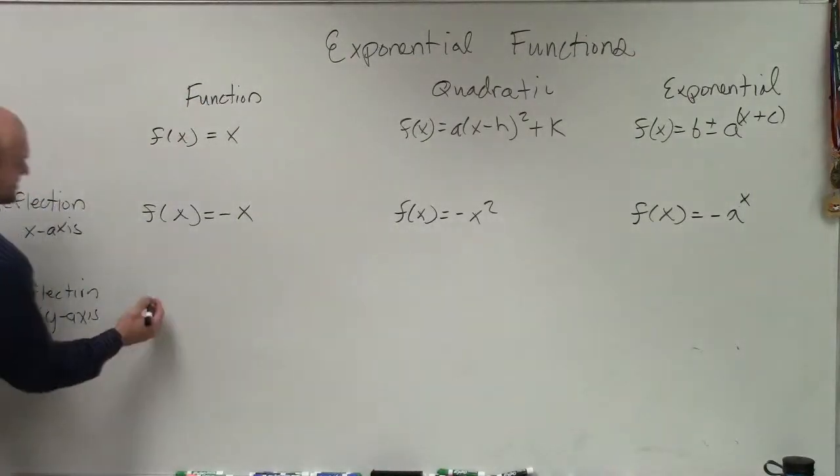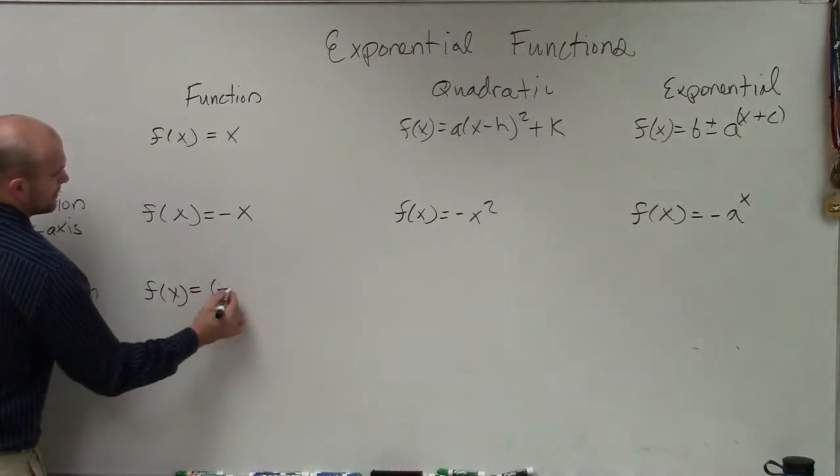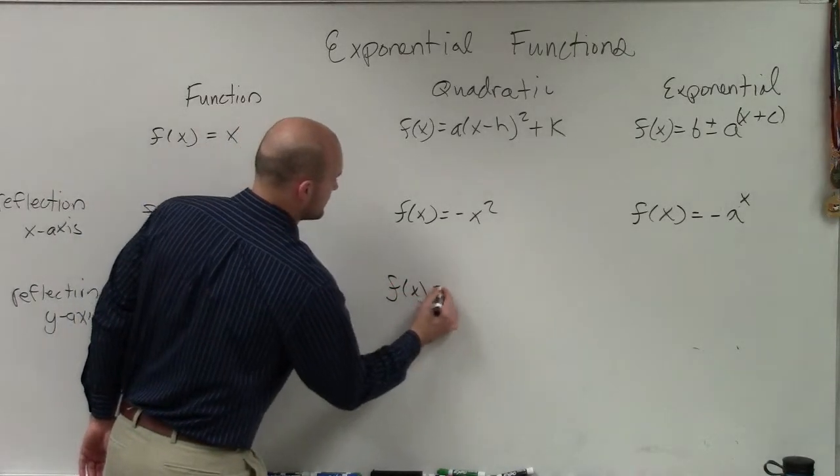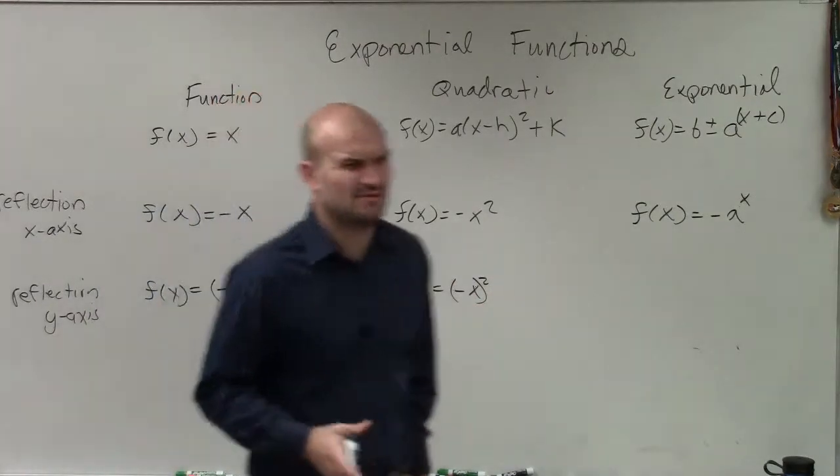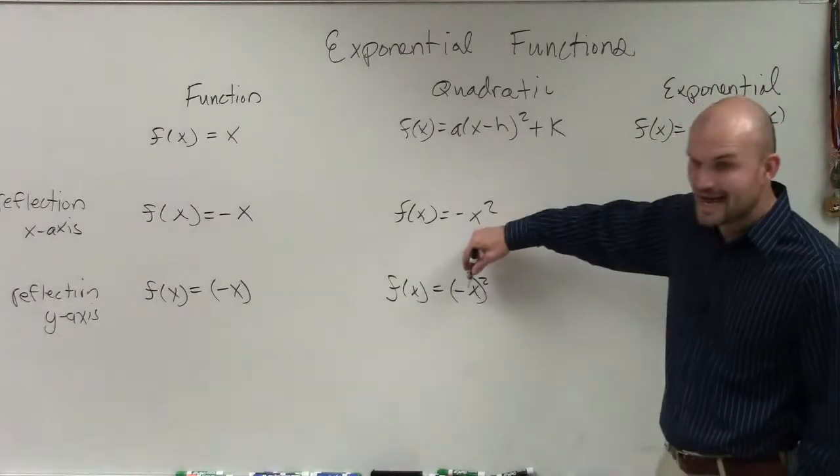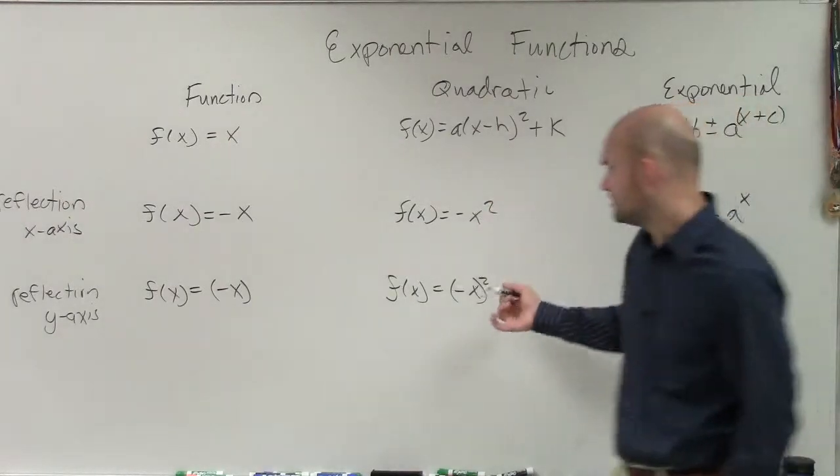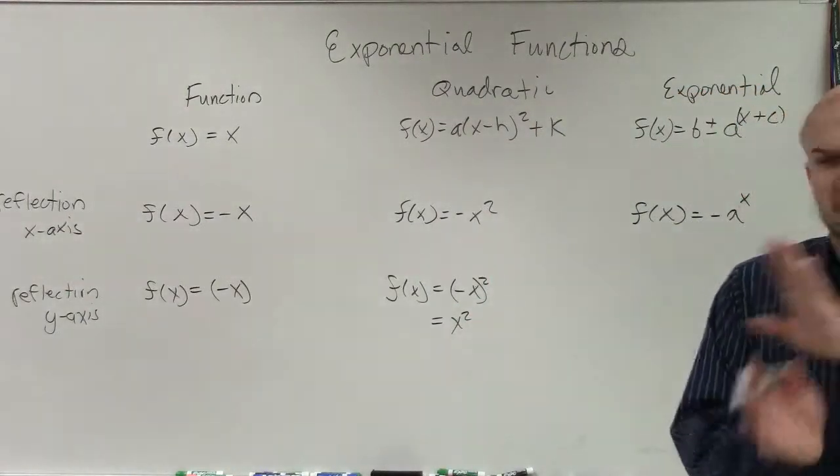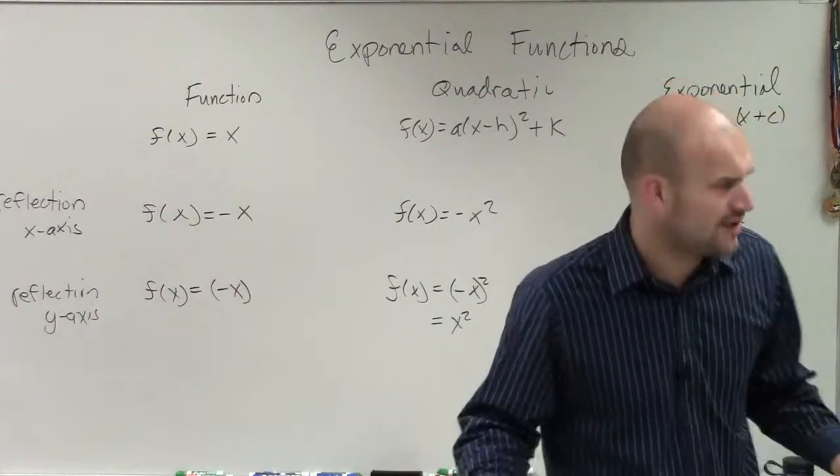So let's get to the reflection of the y-axis. Reflection of the y-axis looks like this. I might say, well, all right, ladies and gentlemen, we didn't do too many of these because any negative number raised to an even power is going to produce a what? Positive. So this is actually just going to produce x squared. So you guys can see that a vertical axis of symmetry is just going to produce the exact same graph for a quadratic.